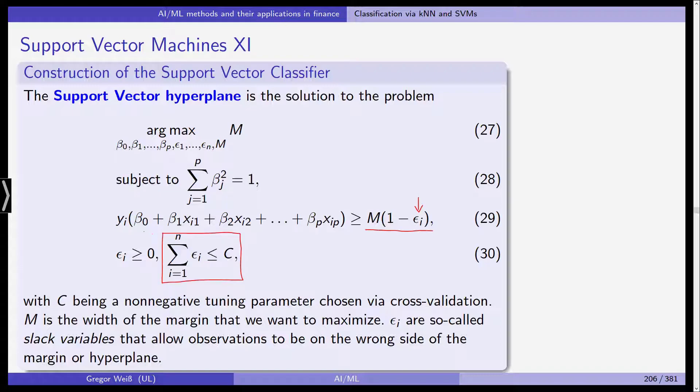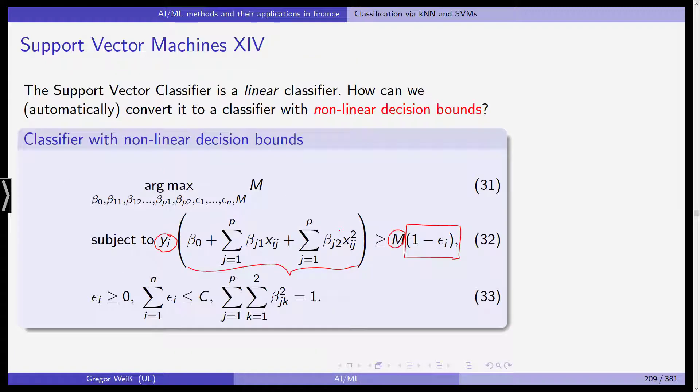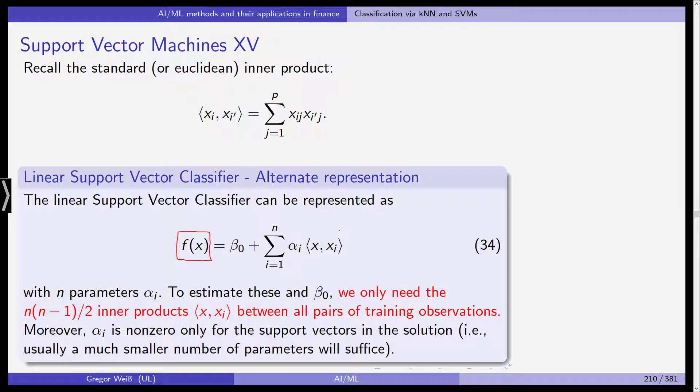So, in other words, we can use this representation. This here, which is a linear function. It's a linear line, a plane, or whatever. And the hyperplane can also be represented in this way. So, instead of using beta 1 times x1, beta 2 times x2, and so on, we can also use the inner products. We get a different set of parameters. Now, these are alpha i and beta zero, of course. And to estimate these, we only need those n times n minus 1 divided by two inner products between all pairs of training observations.